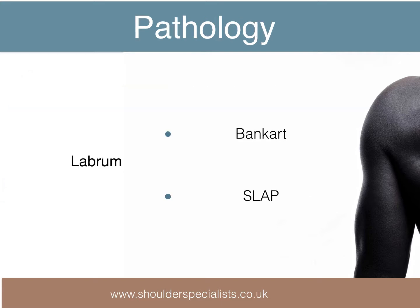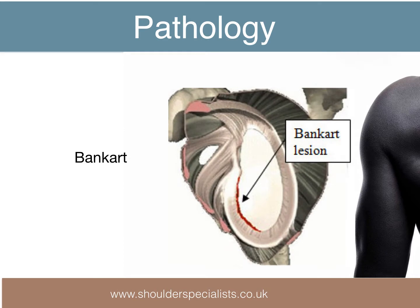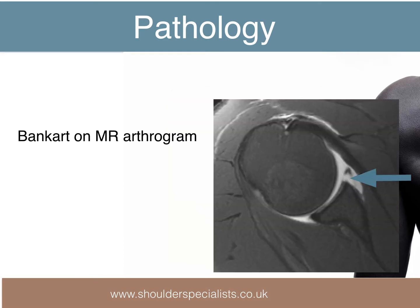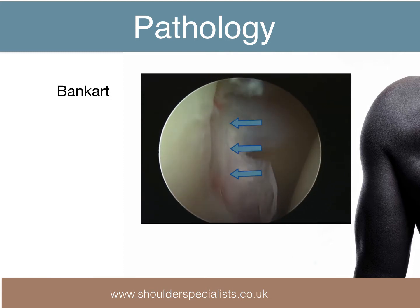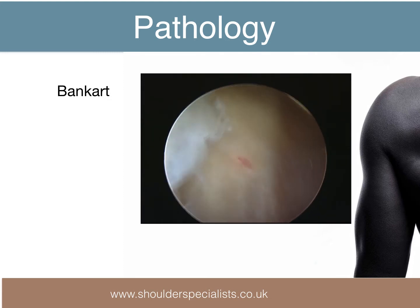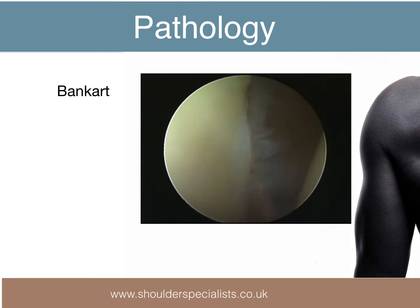The labrum can be damaged inferiorly — a Bankart lesion — which may result in recurrent glenohumeral instability, or superiorly, in the case of a SLAP lesion. A Bankart lesion is the separation of the labrum from the glenoid rim, and is detected on an MRI scan following the injection of dye into the labrum. This clip shows an example of an anterior Bankart lesion, viewing from behind, in the right shoulder.